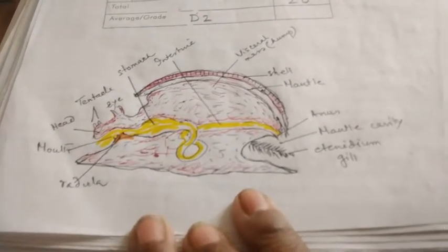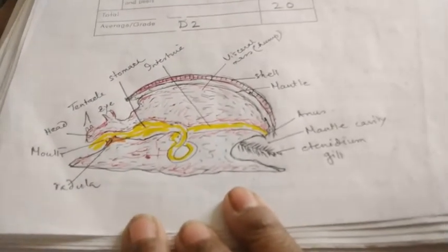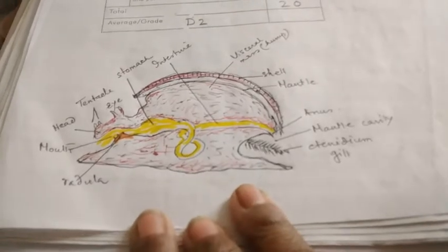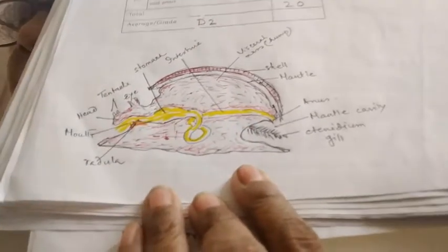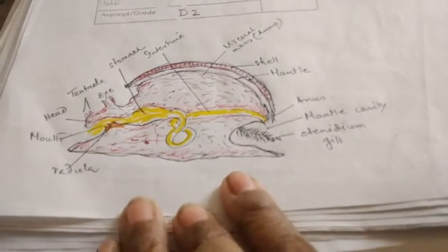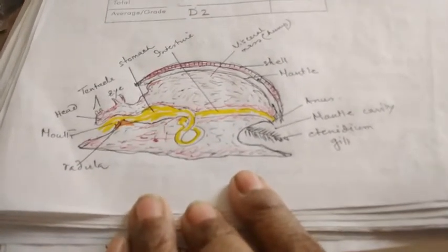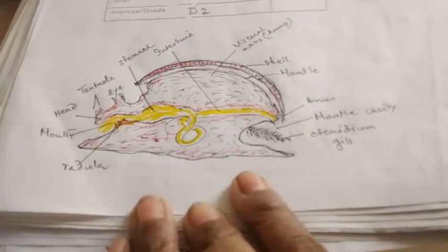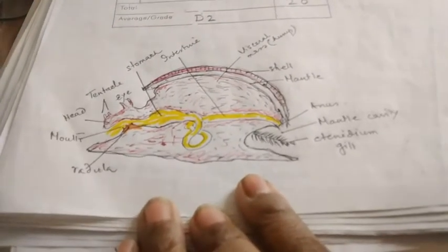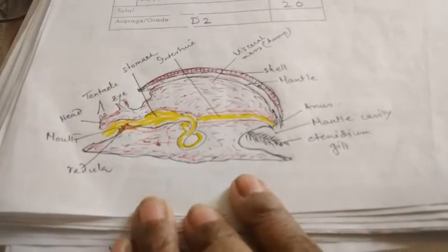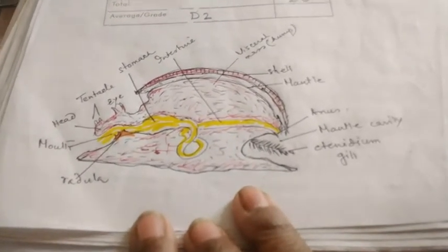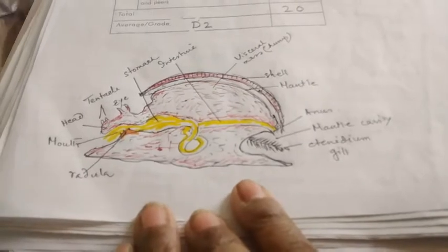Excretory organ is the kidney which is also called organ of Bojanus which also opens in the mantle cavity. Some of them which are aquatic, they are ammonotelic but terrestrial mollusks are also ureotelic.